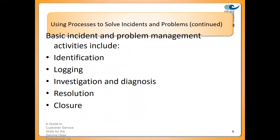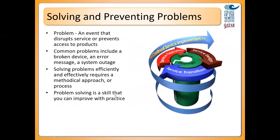Incident and problem management — these are the activities that occur on the service desk. We identify incidents and log them; we create tickets, so logging is creating our tickets. Then we investigate and diagnose, find the root cause if it's a problem, resolve it, and close it. Closing relates to the ticket as well — we close a ticket once the incident is closed. The diagram on the right is a spiral, representing the idea of continuous improvement.